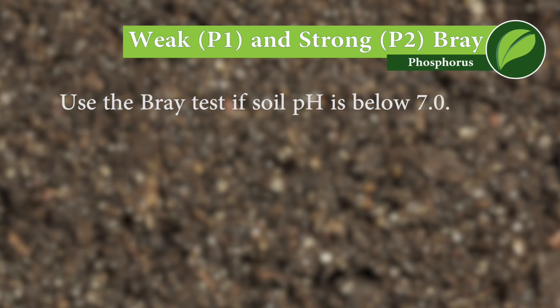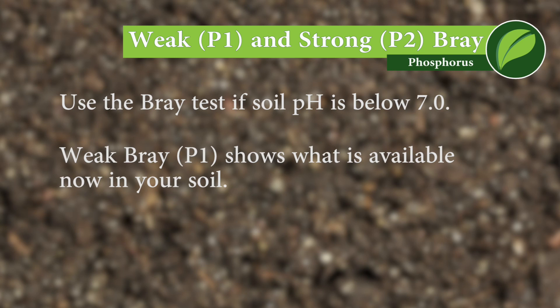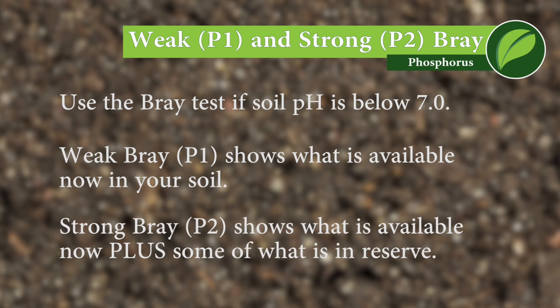With the Bray test, there's a big difference. The P1 or weak Bray tells you what's available right now. The P2 or strong Bray tells you how much is available now plus some of what's in reserve. For example, if you had a hundred for a P2 test, that tells you you've got a lot total in the soil, but if you only have 10 for a P1, that tells you not very much of what's in the soil is available. You've got some tie-up issues going on, and we need to talk through why.